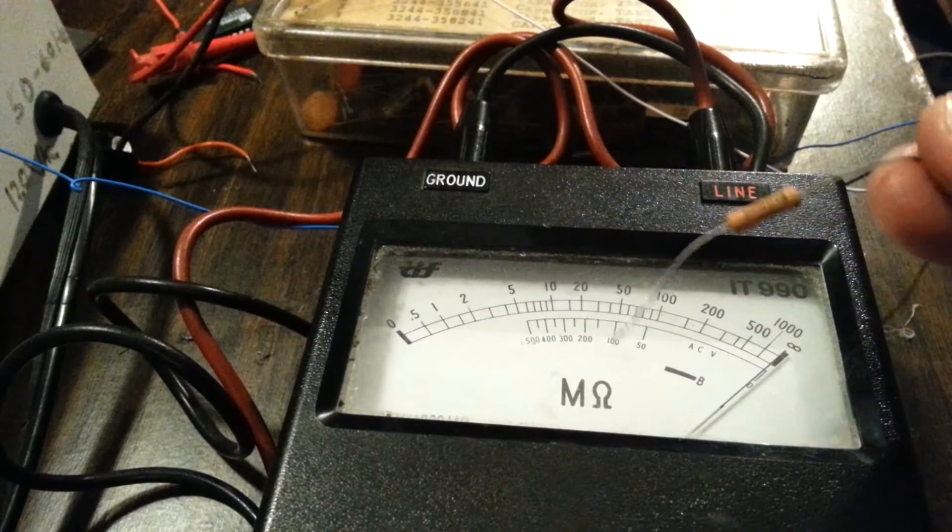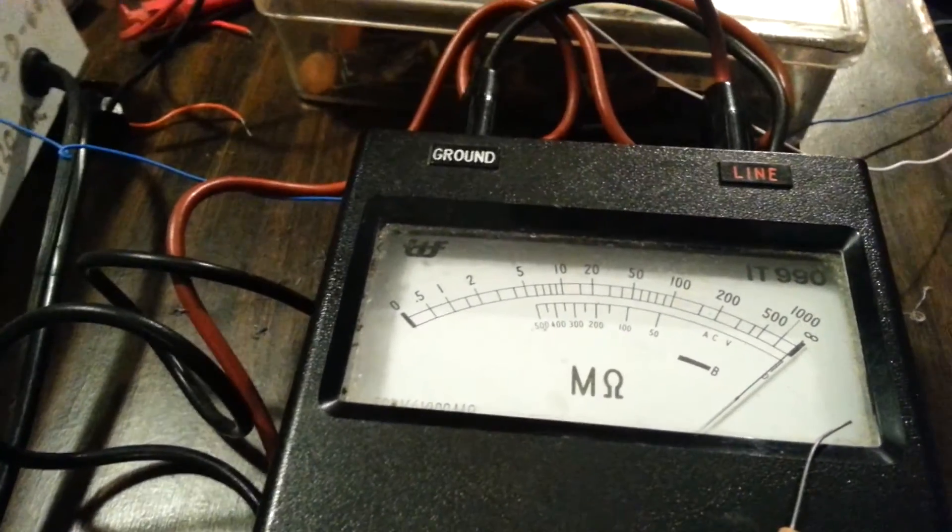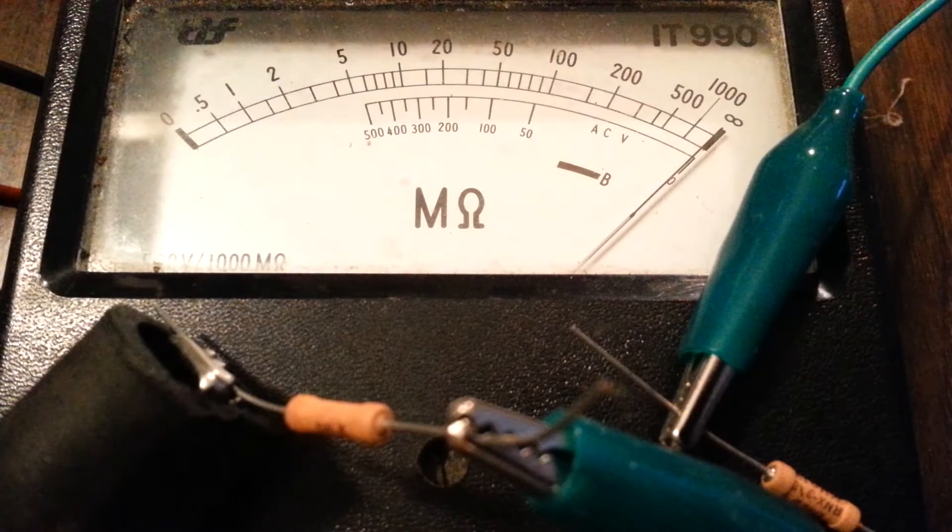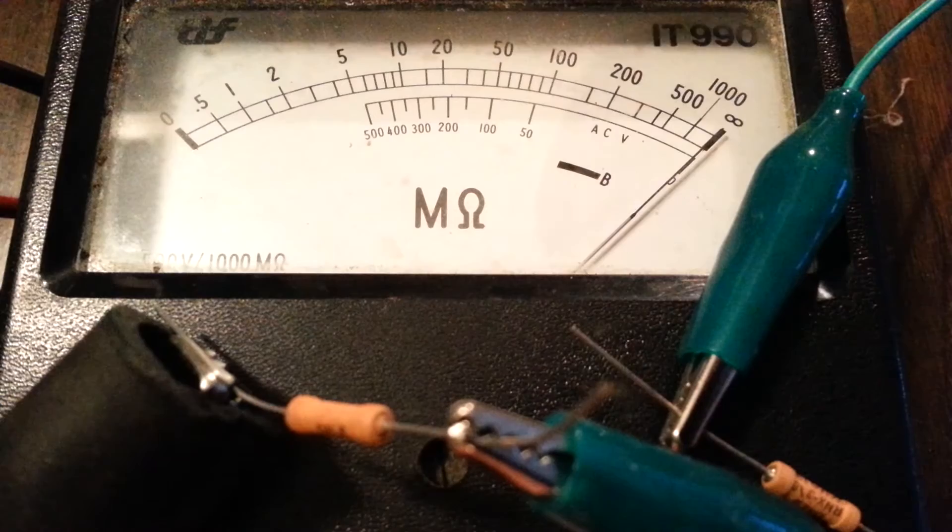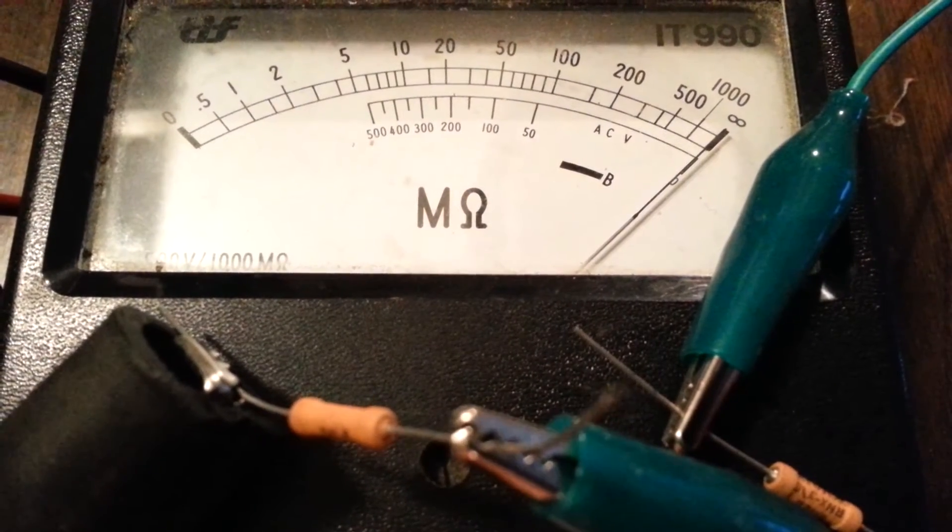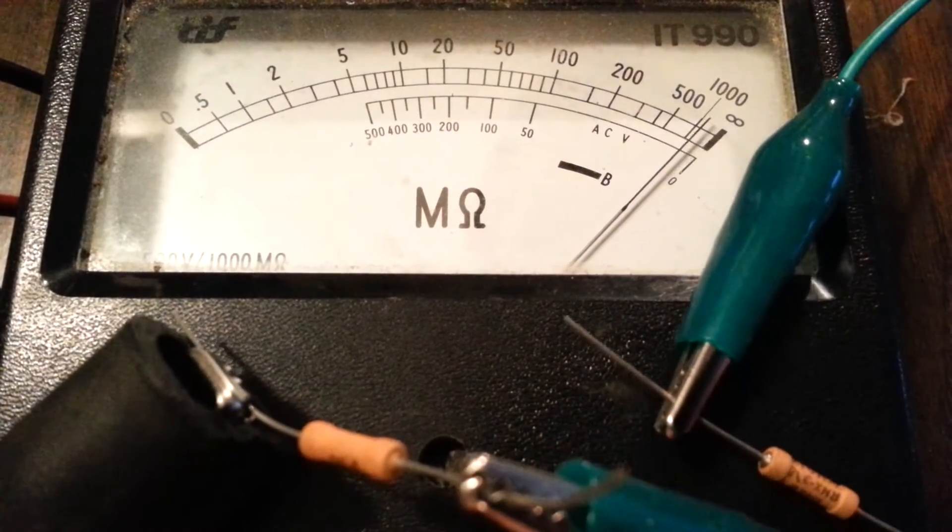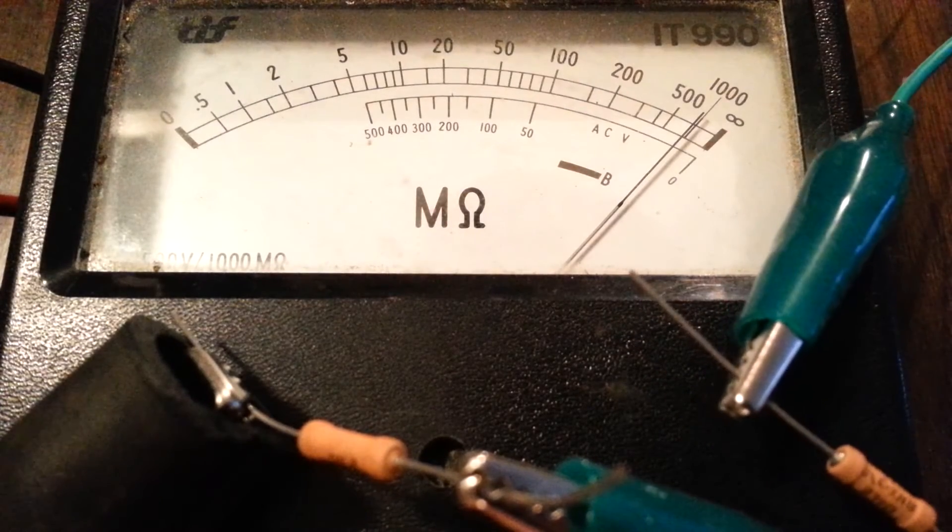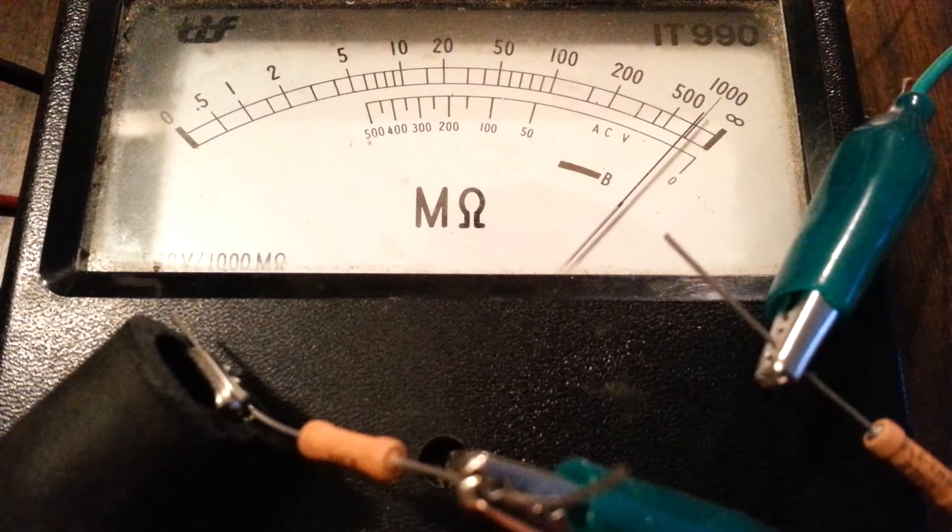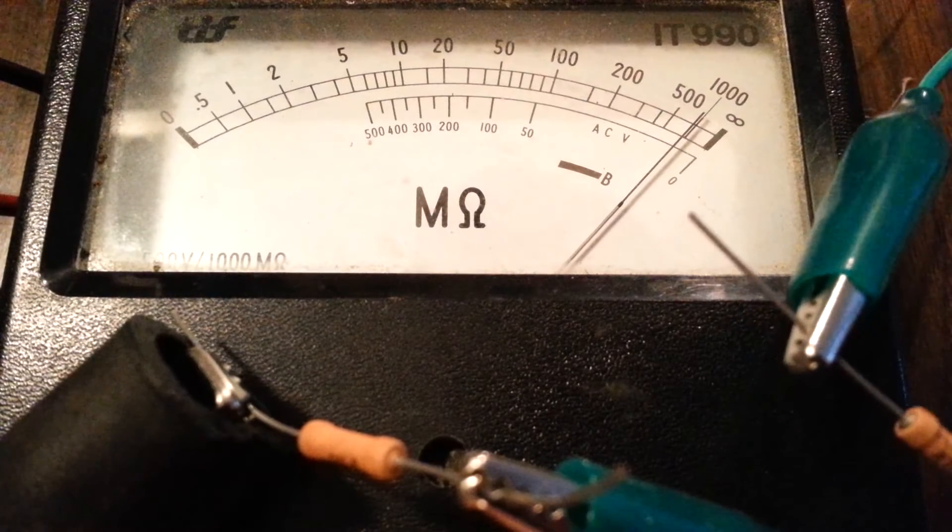Now let's say we want to read a gigaohm. Here I've got two 500 mega ohm resistors in series. And now I'm going to put the probe to the other resistor. We are reading literally, no joke, a gigaohm of resistance.